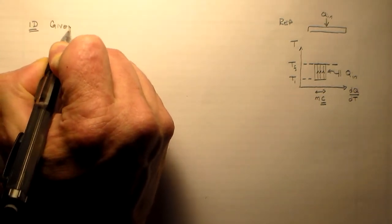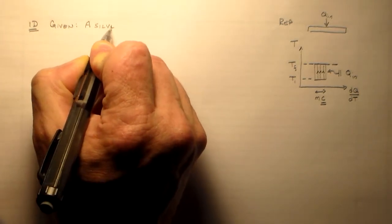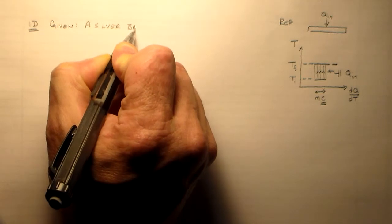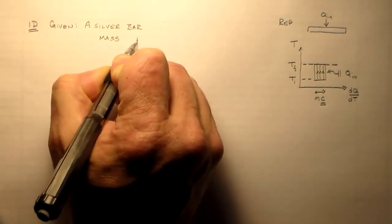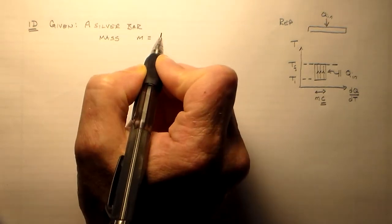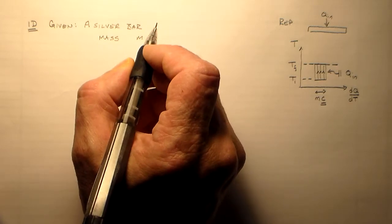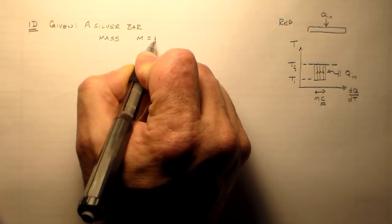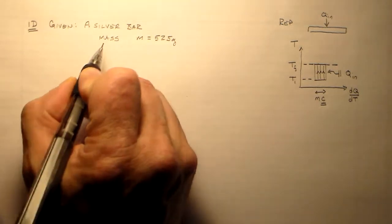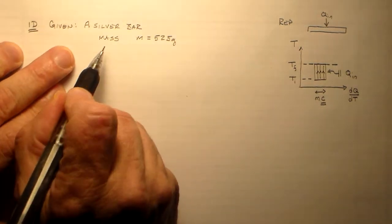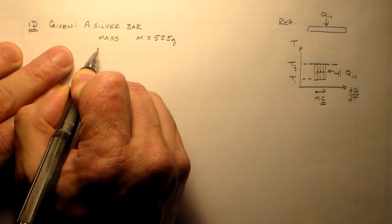So, let's see. What are we given? We're given a silver bar. That bar has a mass, we'll call that mass M, of 525 grams. It does now. It's 525 grams now, whatever it was before. Who cares? Let's see. What else do we know?